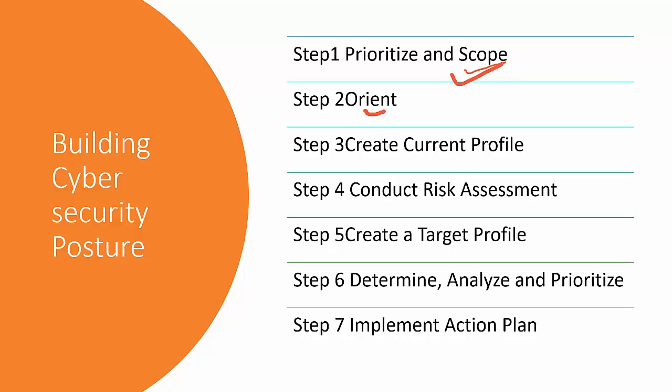The fourth step is Conduct a Risk Assessment. This requires the organization to perform a risk assessment from a cybersecurity perspective. Assets are classified based on their criticality and business impact. We document vulnerabilities and build a risk register. Outputs from this stage include a catalog of potential risk events, target capability levels, a target profile, business impact assessment results, and a reference architecture.